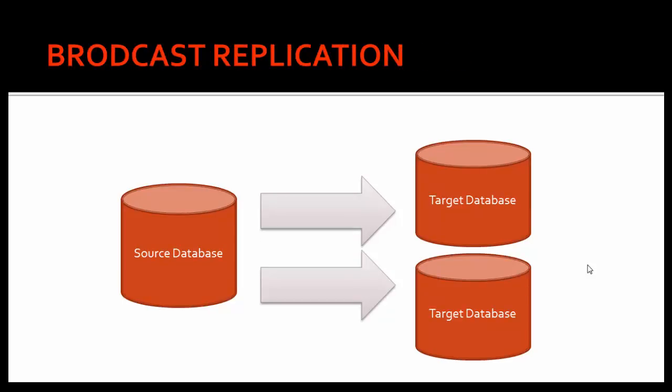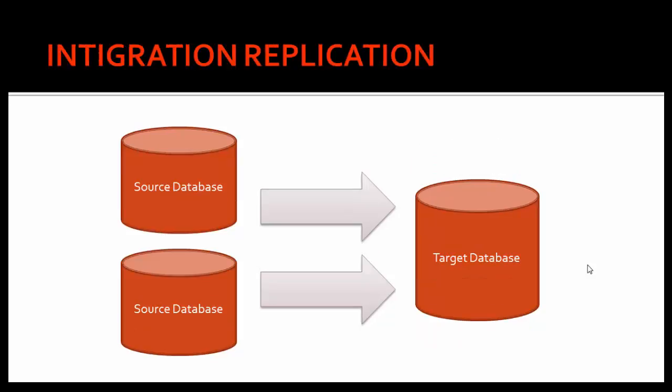The next type of setup in GoldenGate is broadcast replication. You have one source database and you replicate it to two different target databases. This can be used in an environment where you are replicating a production server to a quality database and to a test database. The GoldenGate replicat captures all transaction details from production and replicates them into two different target databases, which can be quality, test, development, or a reporting server.